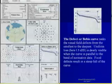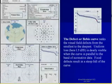Next is the defect or Bede curve. This curve ranks the visual field defects from the smallest to the deepest. Uniform loss, here 1.3 decibels, is clearly visible when the curve is parallel to the band of normative data.